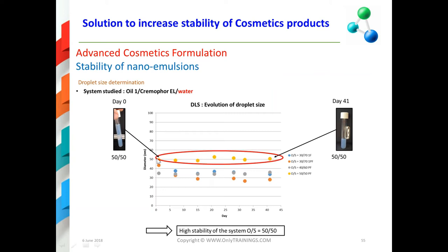In this slide I show you a stability test performed on some nano emulsions with different oil-to-surfactant ratios. You can observe that the particle size determined by light scattering is very constant over time during 40 days of experiments, remaining very constant at 50 nanometers in this example.